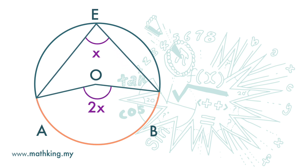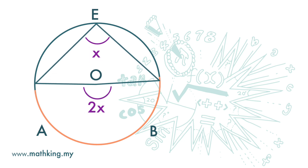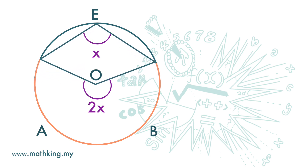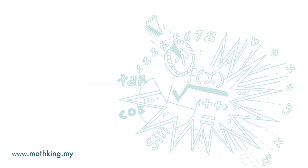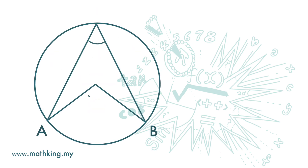Here, the angle at the center is still two times the angle at the circumference. If we have an arc that is more than half of the circle, the rule still holds — the angle at the center is still two times the angle at the circumference.